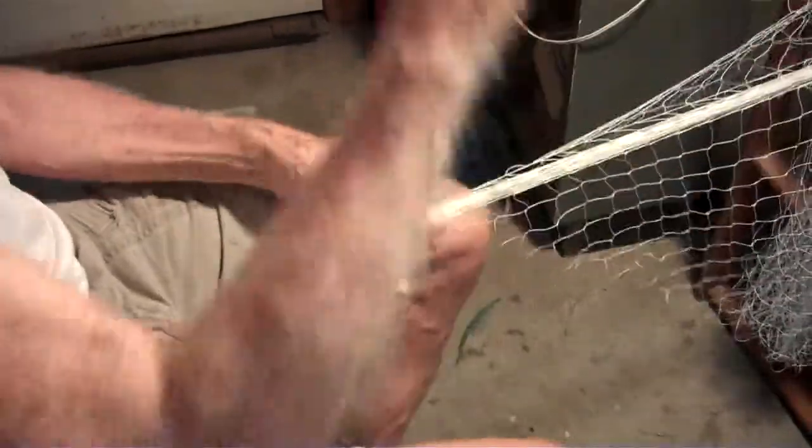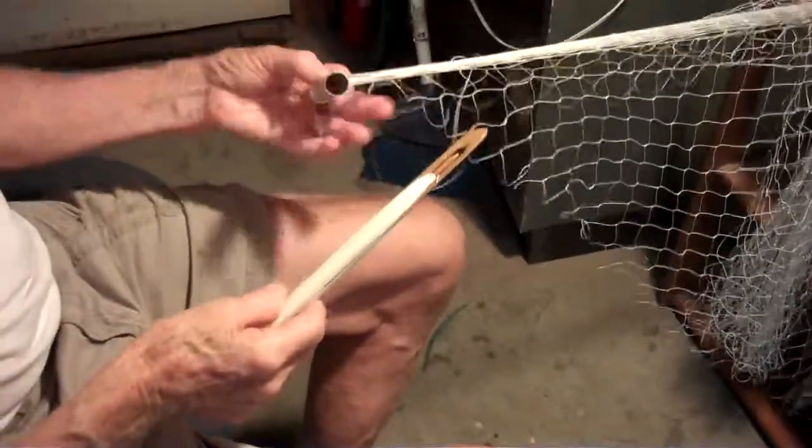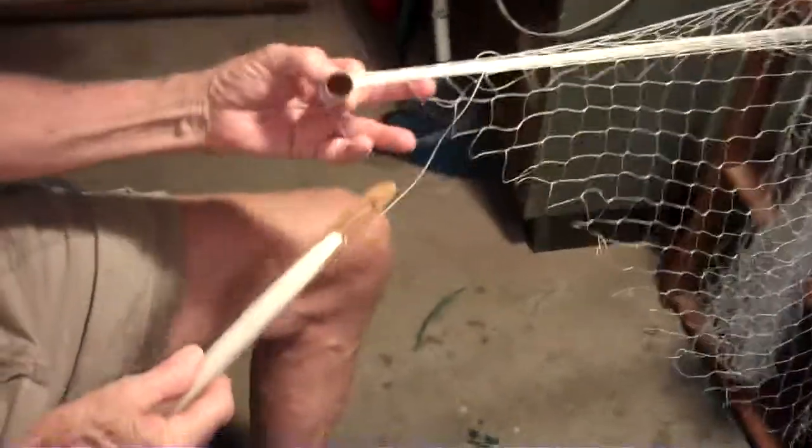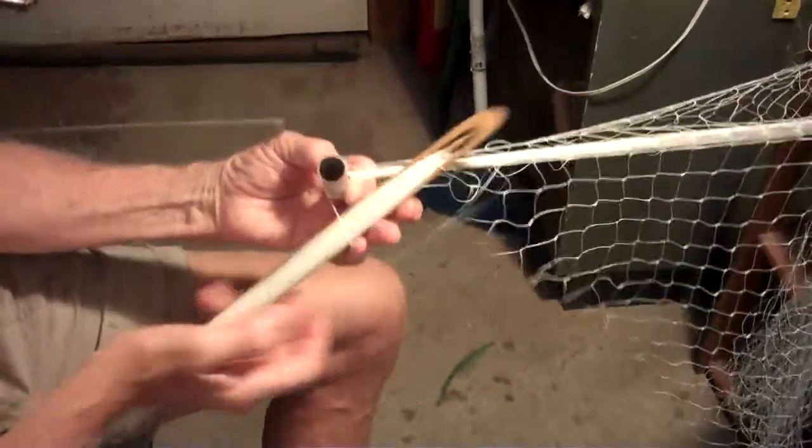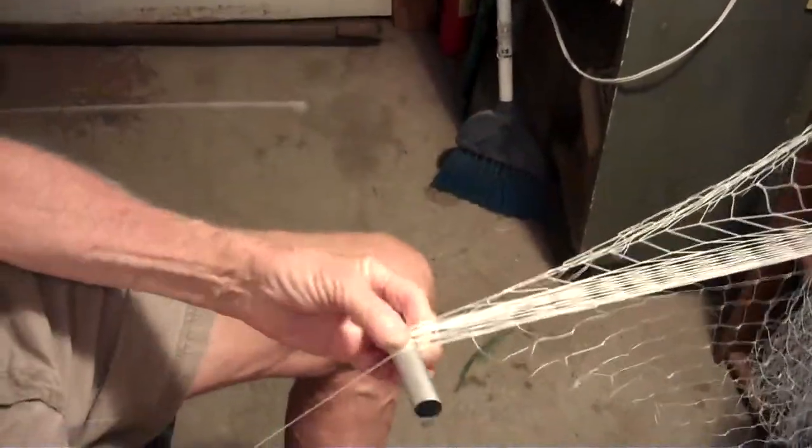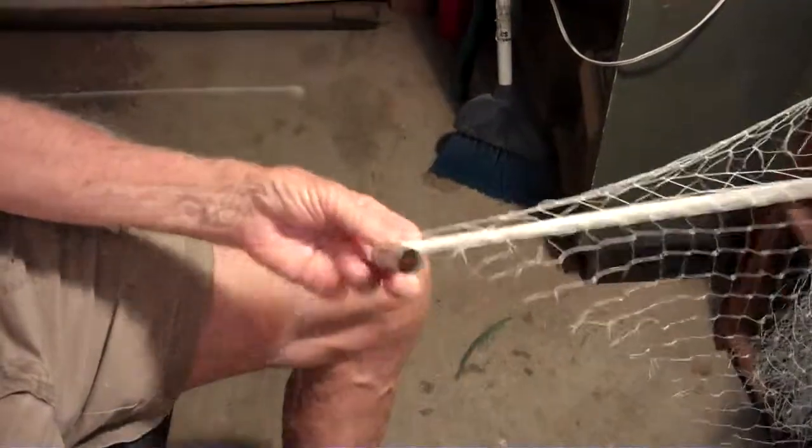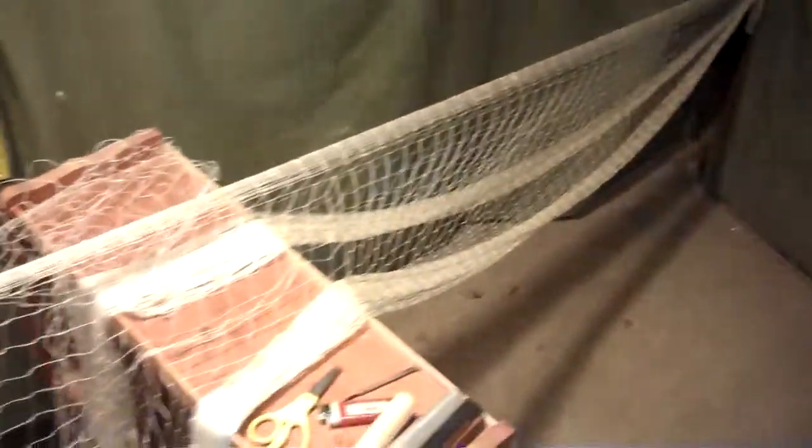I'm from the younger generation. I don't believe anything's worth something unless I can go to Walmart and buy it. Norman here thinks it ain't worth nothing unless you make it yourself. And I believe that too, actually. I wouldn't throw a monofilament net unless I had to. And these nylon handmade nets are just a completely different concept.